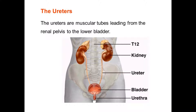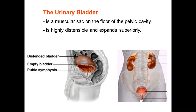The ureters are muscular tubes leading from the renal pelvis to the lower bladder. The urinary bladder is a muscular sac on the floor of the pelvic cavity; it is highly distensible and expands superiorly.